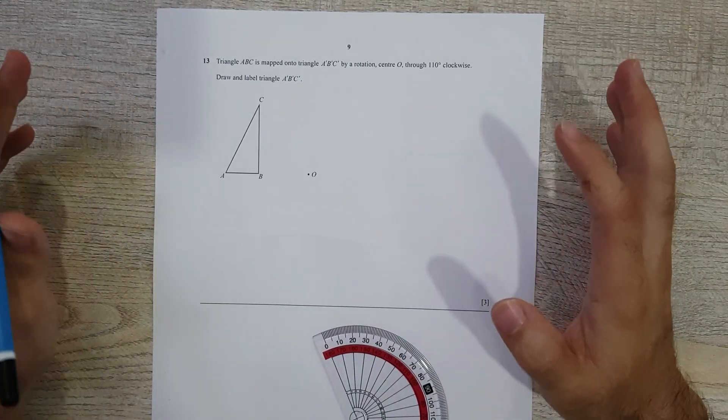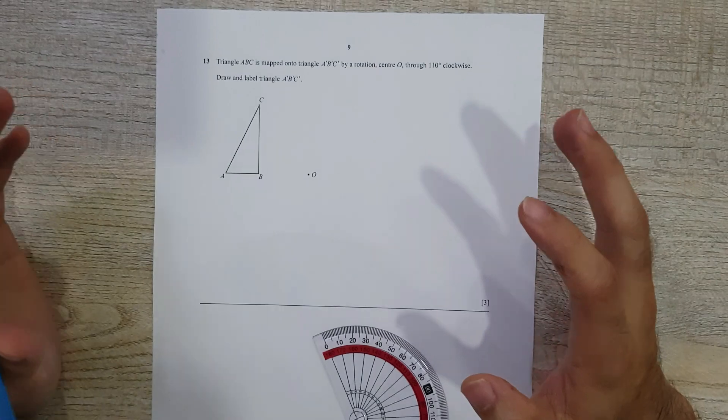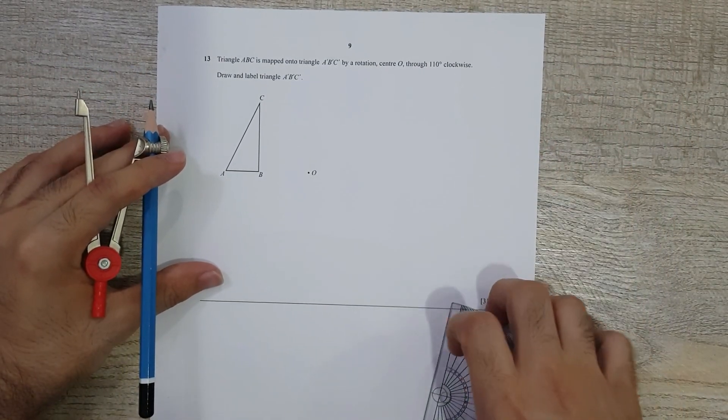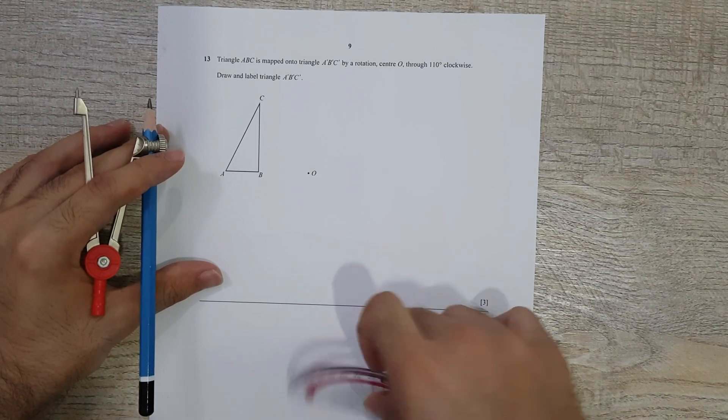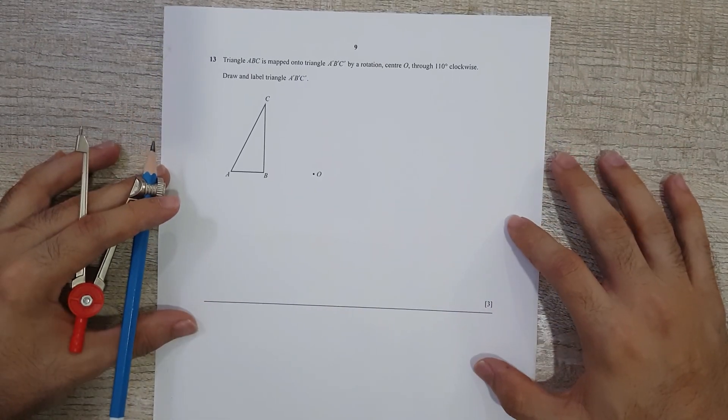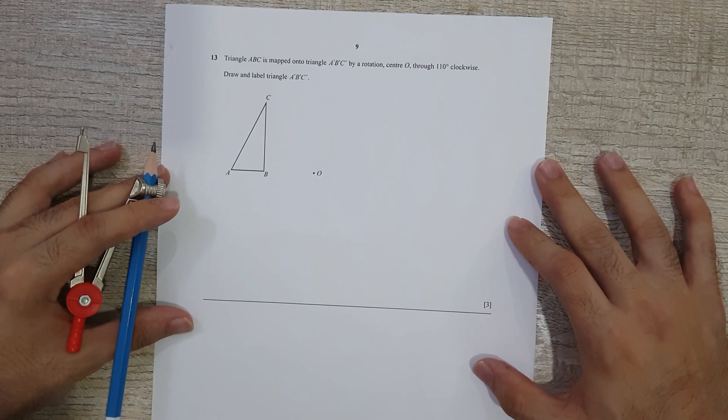We're all used to rotating objects 90 degrees, 180, 270, basically multiples of 90 clockwise or anti-clockwise. But this is a question from October/November 2016 Paper 1 Variant 2.